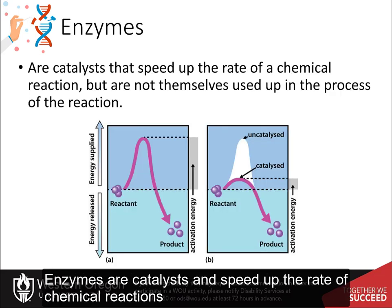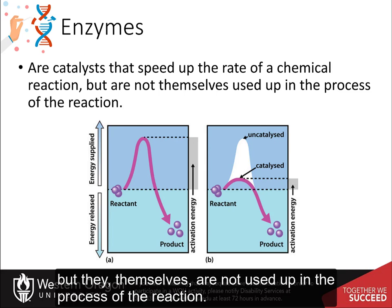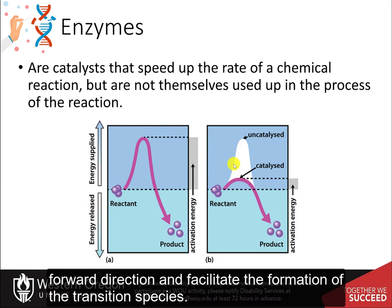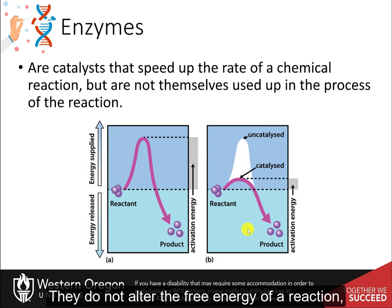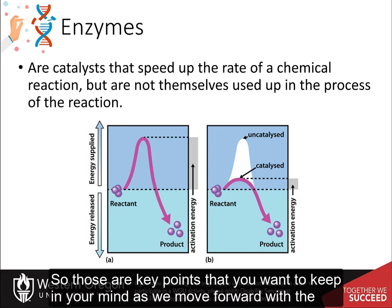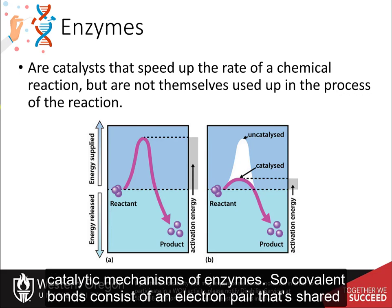Enzymes are catalysts that speed up the rate of chemical reactions, but they themselves are not used up in the process of the reaction. They act by lowering the activation energy required for the reaction to proceed in a forward direction and facilitate the formation of the transition species. They do not alter the free energy of a reaction, nor do they determine the spontaneity of the reaction.